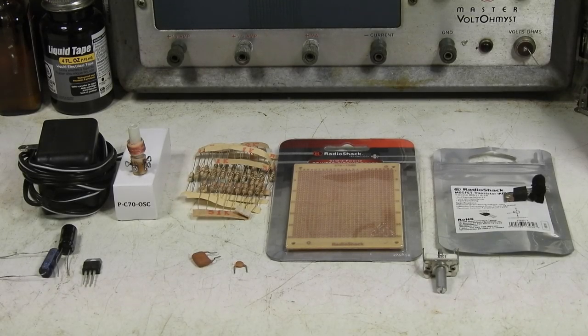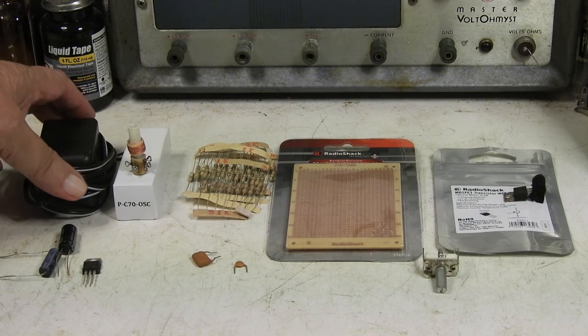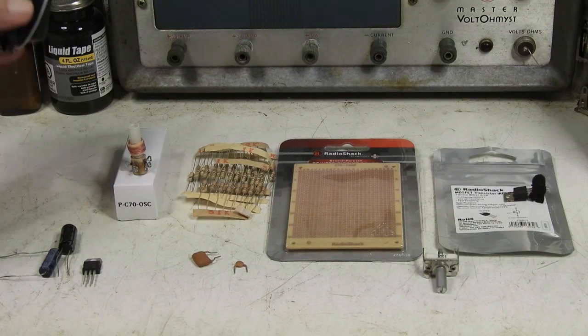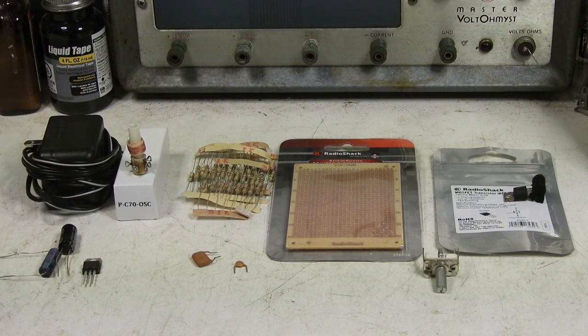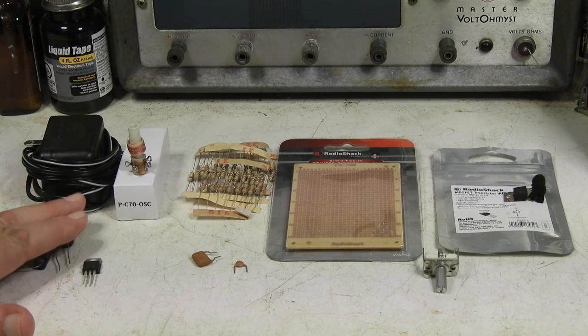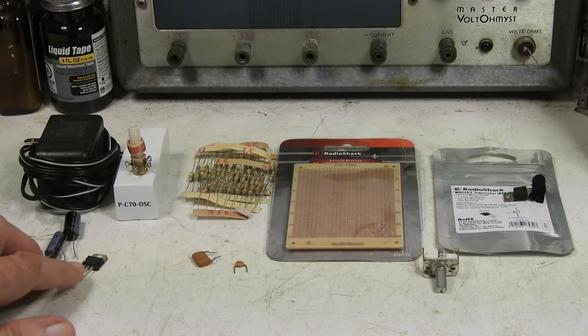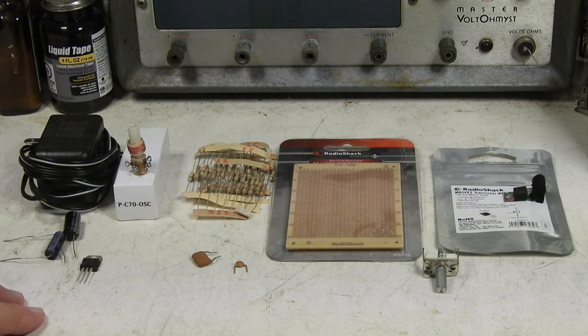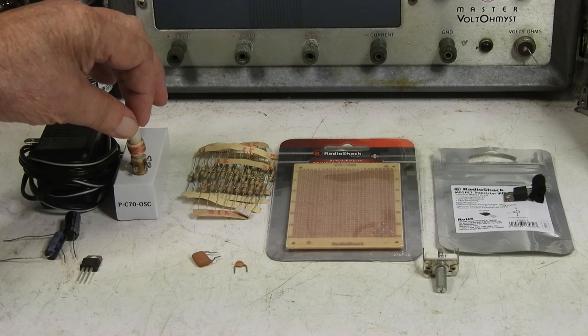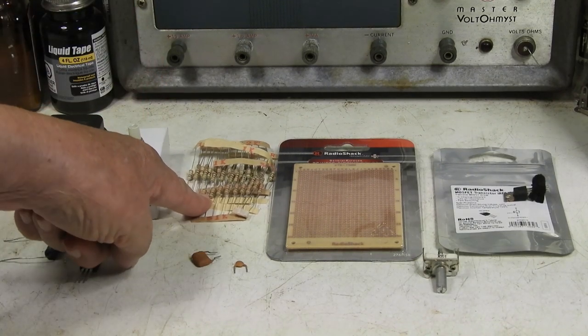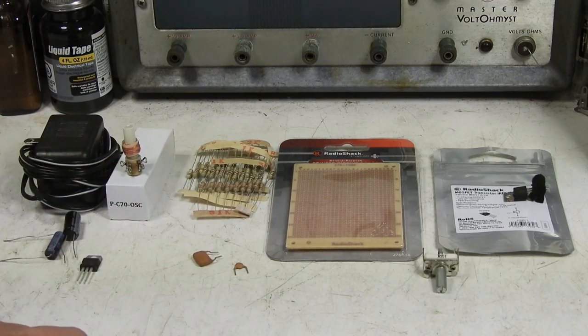I need to make an AM transmitter and I think I'm going to use this wall wart as power supply eventually. Not sure yet. But I've got some electrolytic capacitors here for the power supply and a 12 volt voltage regulator right here. And for the transmitter, there's our coil right here.